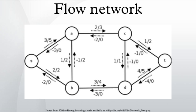In a network with gains or generalized network each edge has a gain, a real number such that, if the edge has gain G, and an amount X flows into the edge at its tail, then an amount of GX flows out at the head.